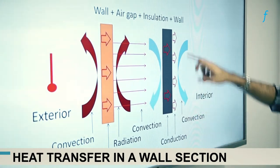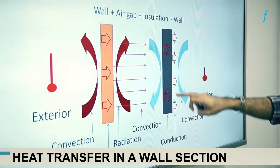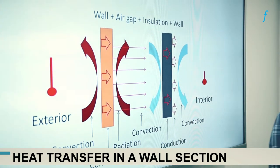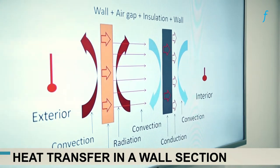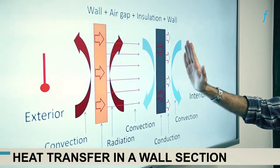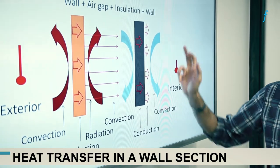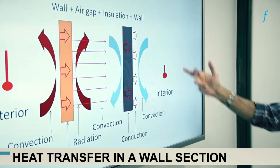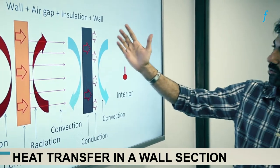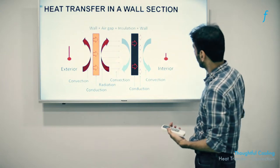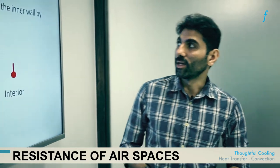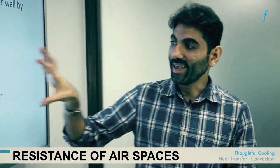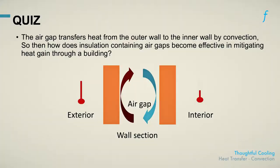The heat makes its way into the inner side of the inner wall, where it encounters insulation. This insulation does impede some of the heat but not all of it. In thermal equilibrium conditions, some heat will make its way to the other side, and thereafter convection is activated again on this side, allowing the heat from this wall to make its way into the interiors of the building. In summary, the air gap, while effective as a resistor, is still a transmitter of heat through convection.